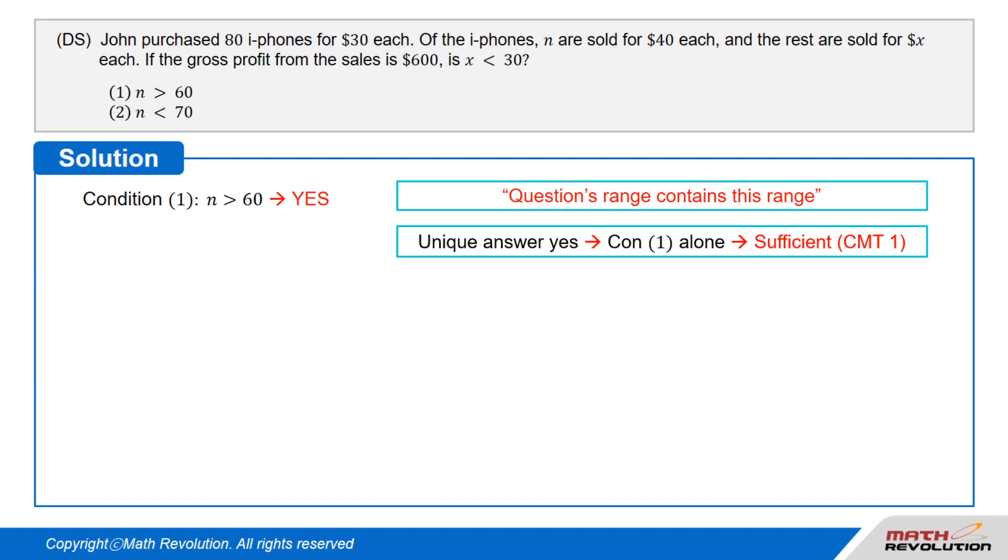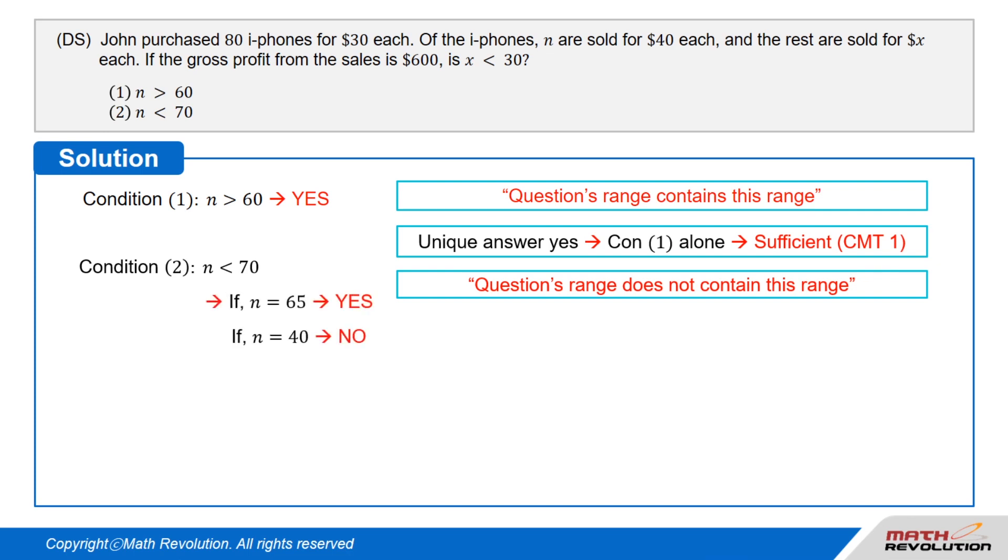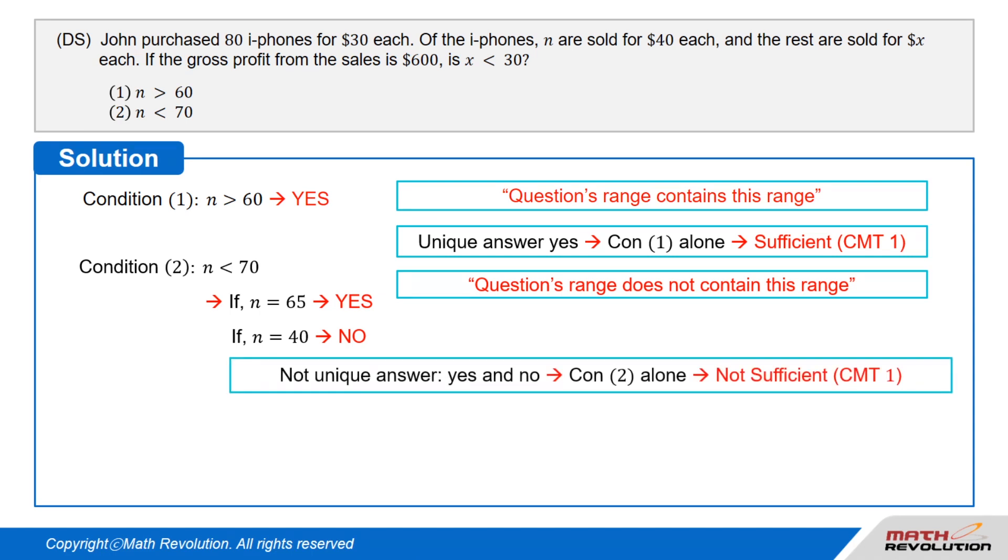Condition 2 tells us that N is less than 70. Now, the question's range does not contain this range. If N is 65, the answer is yes, while if N is 40, the answer is no. So, we don't get a unique value, and the condition is not sufficient.